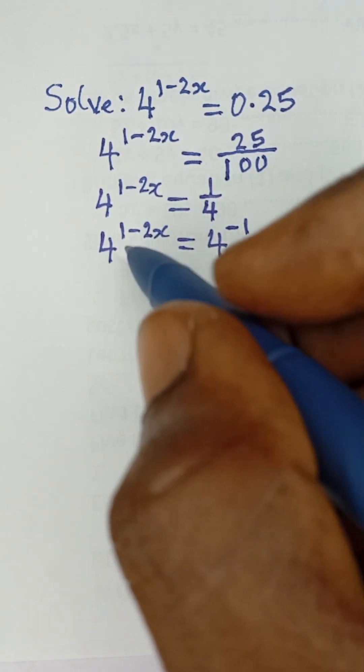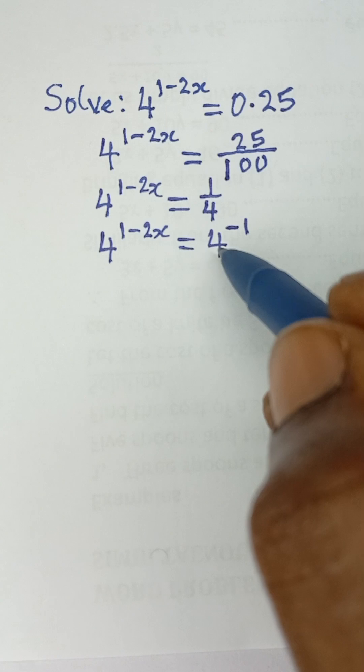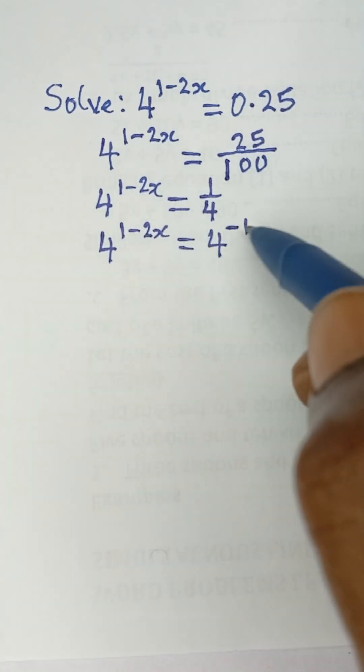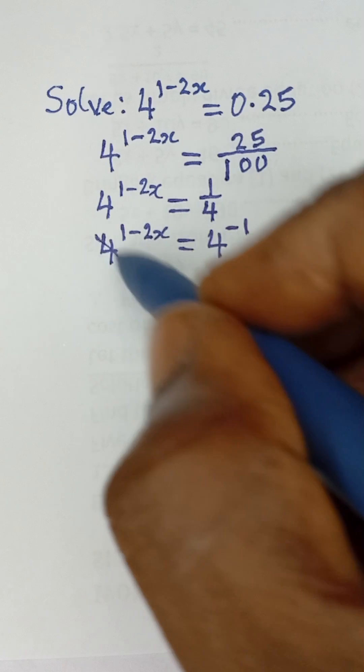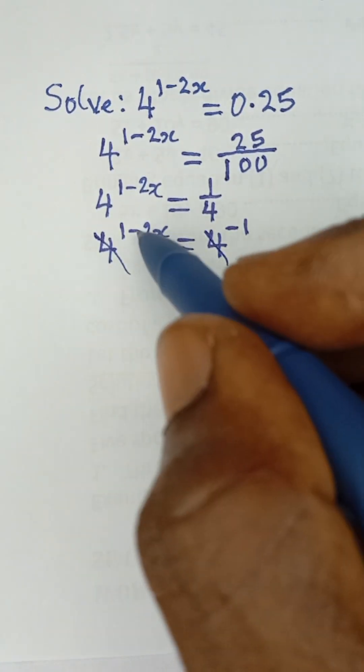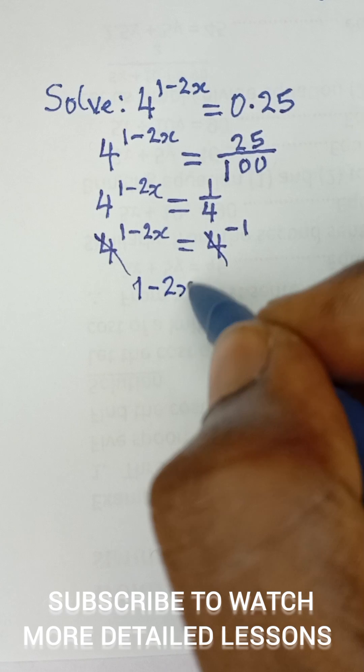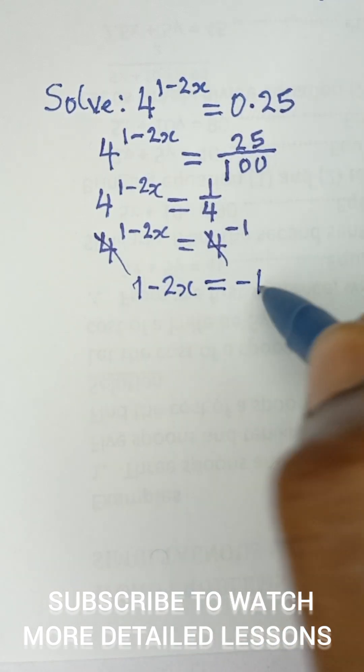So we can now say that the bases are the same. Since the bases are now the same, it means that the powers are also the same. So I can simply ignore the bases and equate the powers and say 1 minus 2x is equal to negative 1.